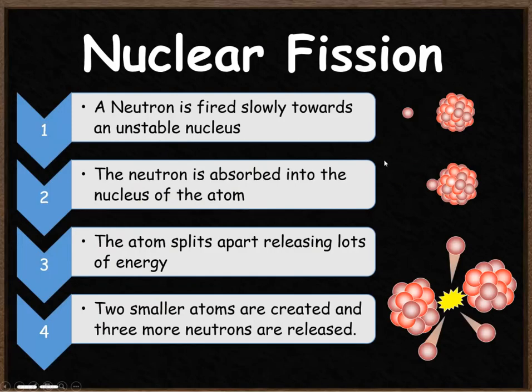So that process again. A neutron is fired slowly towards an unstable nucleus, there's your neutron, there's the unstable nucleus. The neutron is absorbed into the nucleus of the atom.